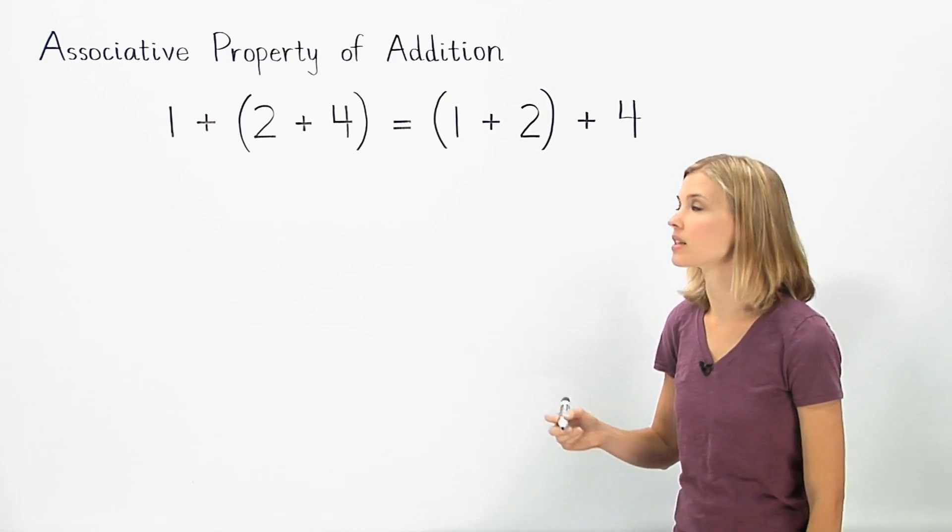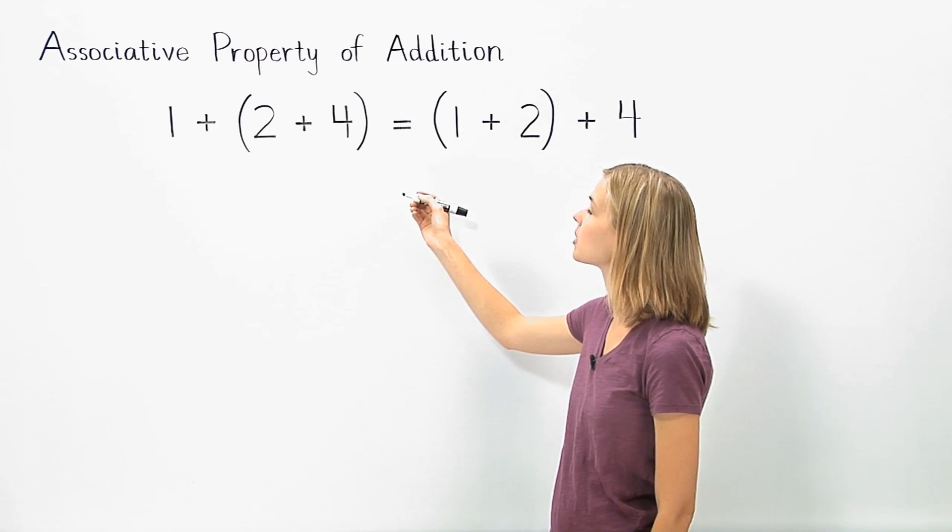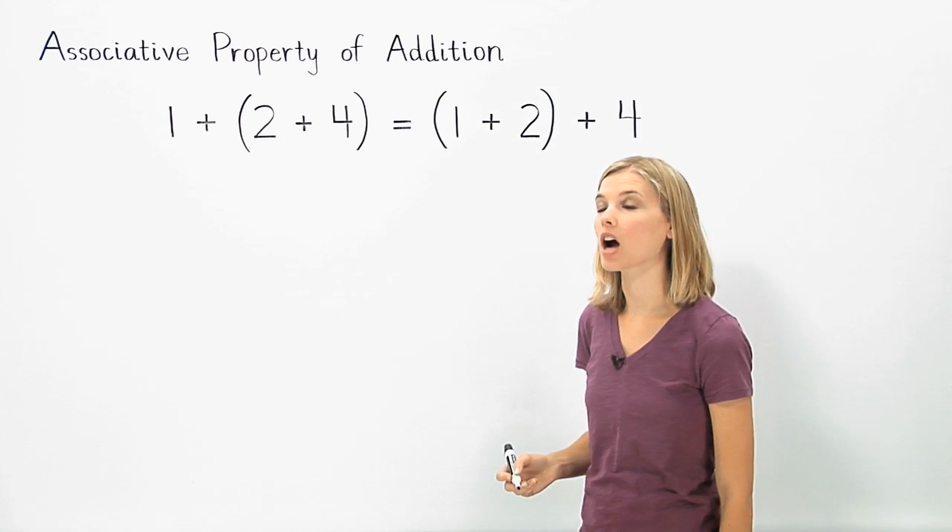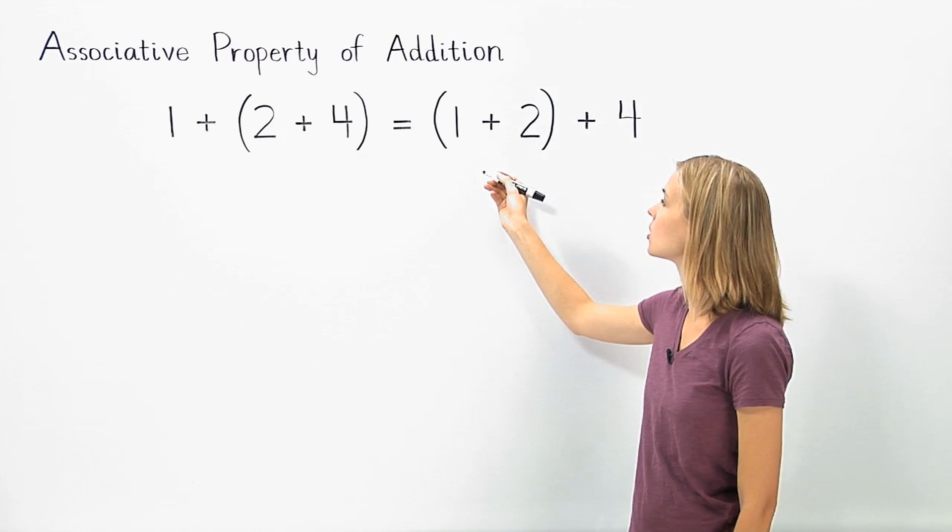Notice that the addends are the same on both sides of the problem: 1 plus 2 plus 4. However, on the left we group the 2 plus 4, and on the right we group the 1 plus 2.